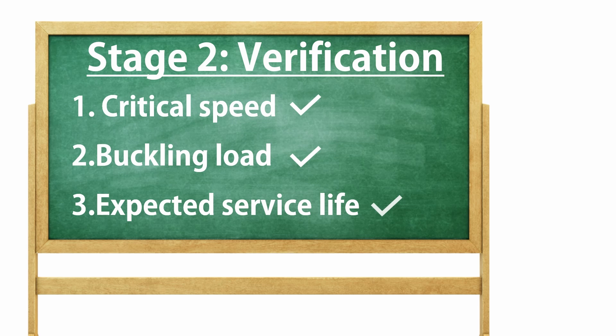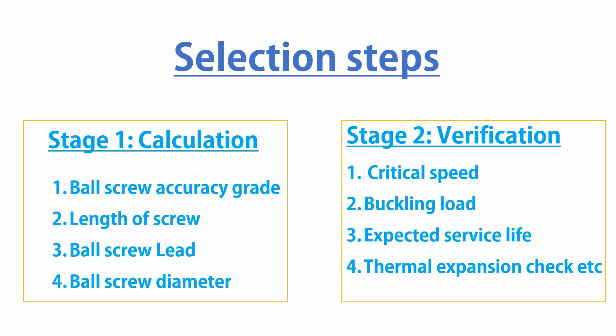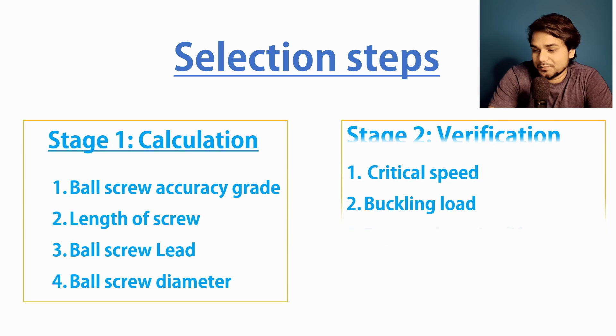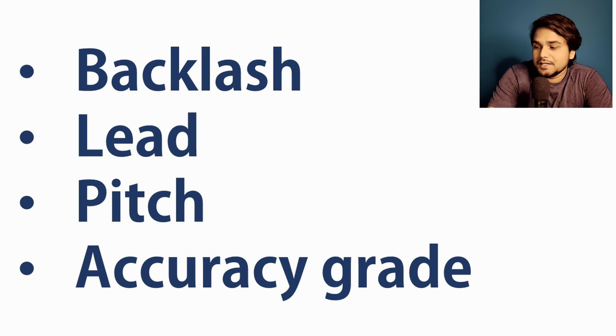If our selected ball screw does not pass those checks, we may have to make some adjustments to the selected parameters. This is the only way to make the correct selection of a ball screw. There is no single formula — there are steps, and all these steps are correlated to each other. There are online tools from manufacturing brands that we can use for free, but I want you to go through the selection process yourself, because it is necessary to know what steps and calculations are behind those tools. In interviews, we cannot just say we use online tools.